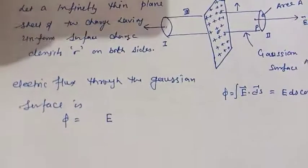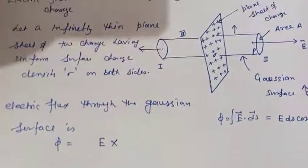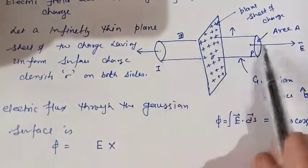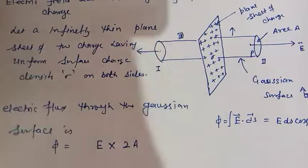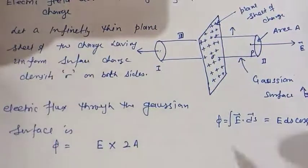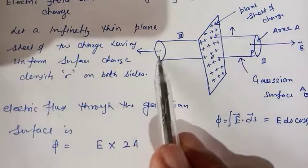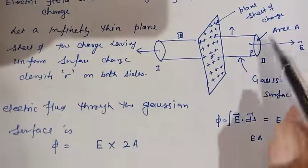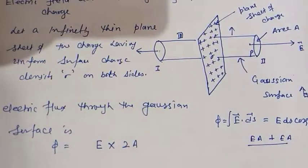Electric flux is the product of electric field into area. Along the two circular faces, area is A on one side and A on the other side, so total area is 2A. For part one: electric field E times area A gives EA, and for part two: also EA. So total electric flux phi equals EA plus EA, which is E into 2A.